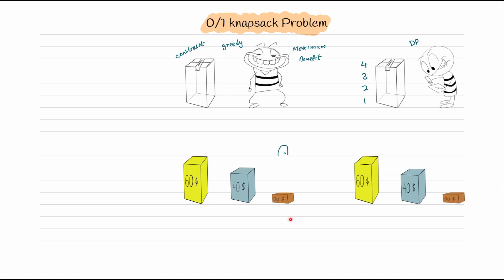When they enter the building, they find some items. Each item has a particular size and price. One item has a price of sixty dollars and a size of four. Another item is forty dollars with a size of three. The third item is thirty dollars with a size of one.